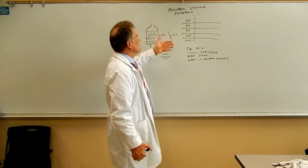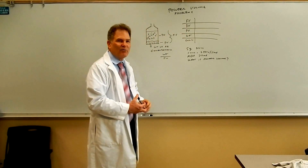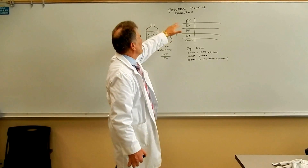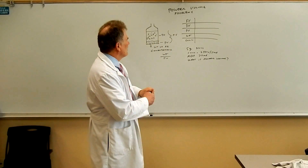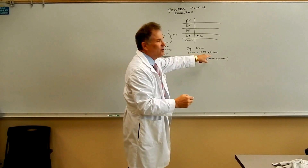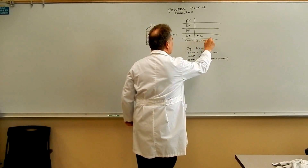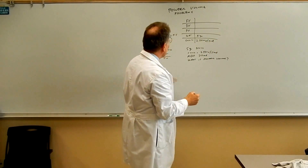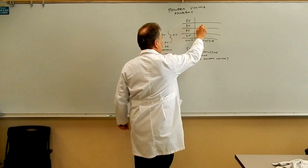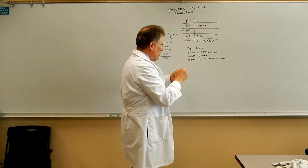The first time I taught this I didn't use this chart and things were complicated, so I came up with this chart to make it simpler. Basically all you have to do is fill in the blanks. The weight is five grams. The concentration is 250 milligrams per five mL. We add 70 mLs — that's the diluent volume. Now we need to find the powder volume.